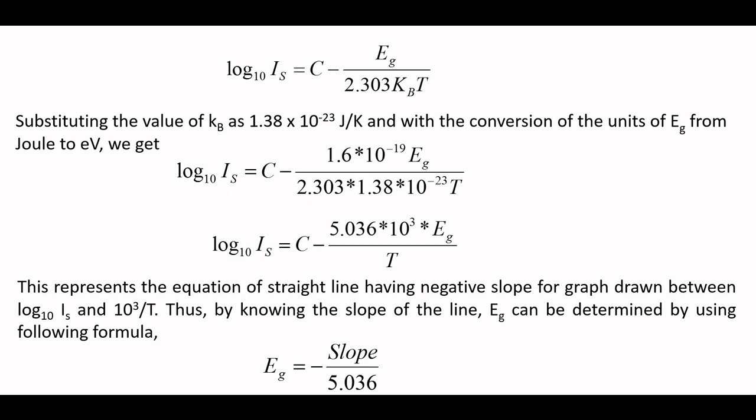As earlier mentioned, we have a graph of negative slope. So that negative sign of the slope will cancel out with this minus sign and we get the energy band gap of the semiconducting diode material.